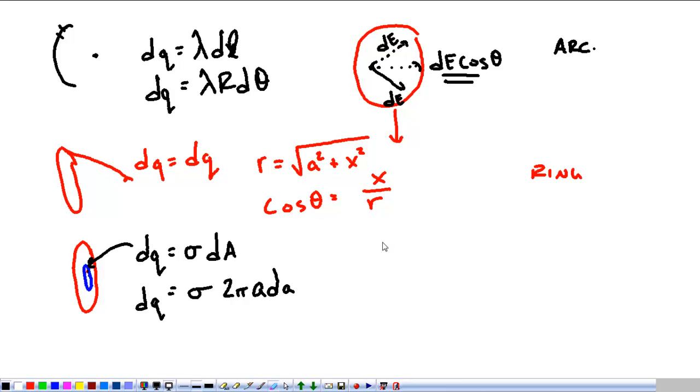And because we already know the electric field from that, the differential electric field was K·X·DQ over (X² + A²)^(3/2). And we integrate that from zero, the beginning radius of our circle, all the way out to R, the end radius. So these are the three big things that we've looked at so far with this. What we're going for is an overall understanding of finding and defining DQ, looking at whatever symmetry that we have, and integrating it until we get our electric field.